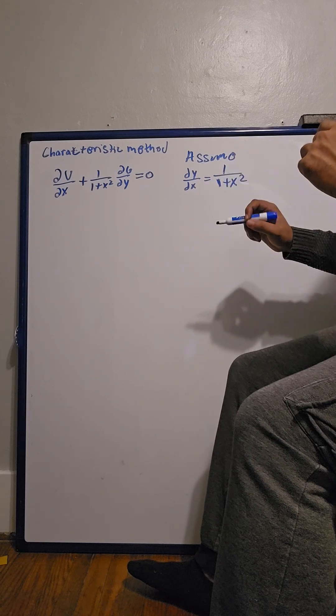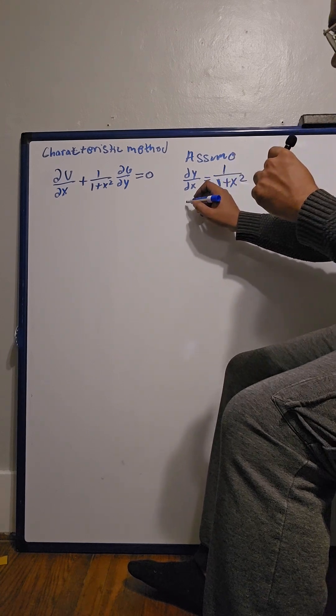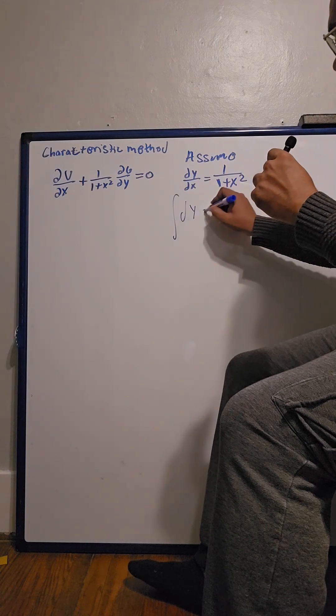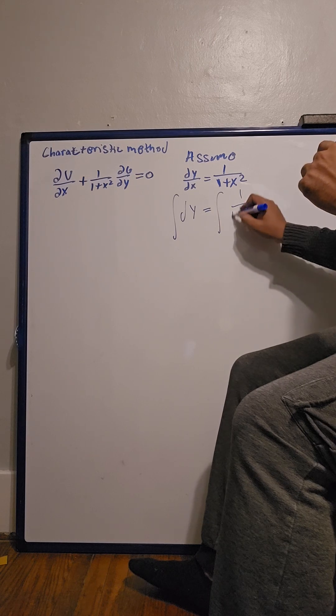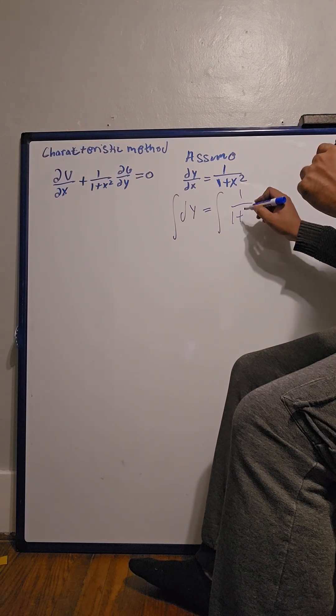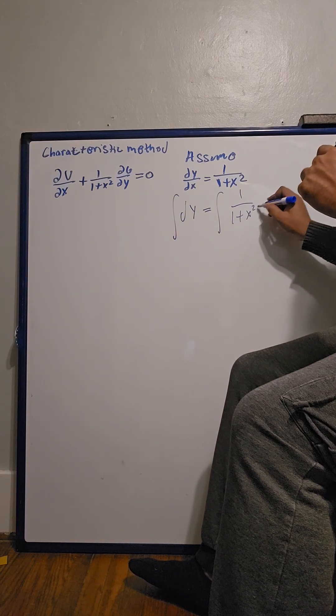Now we're going to solve for y. So we get dy equals the integral of 1 over 1 plus x squared dx.